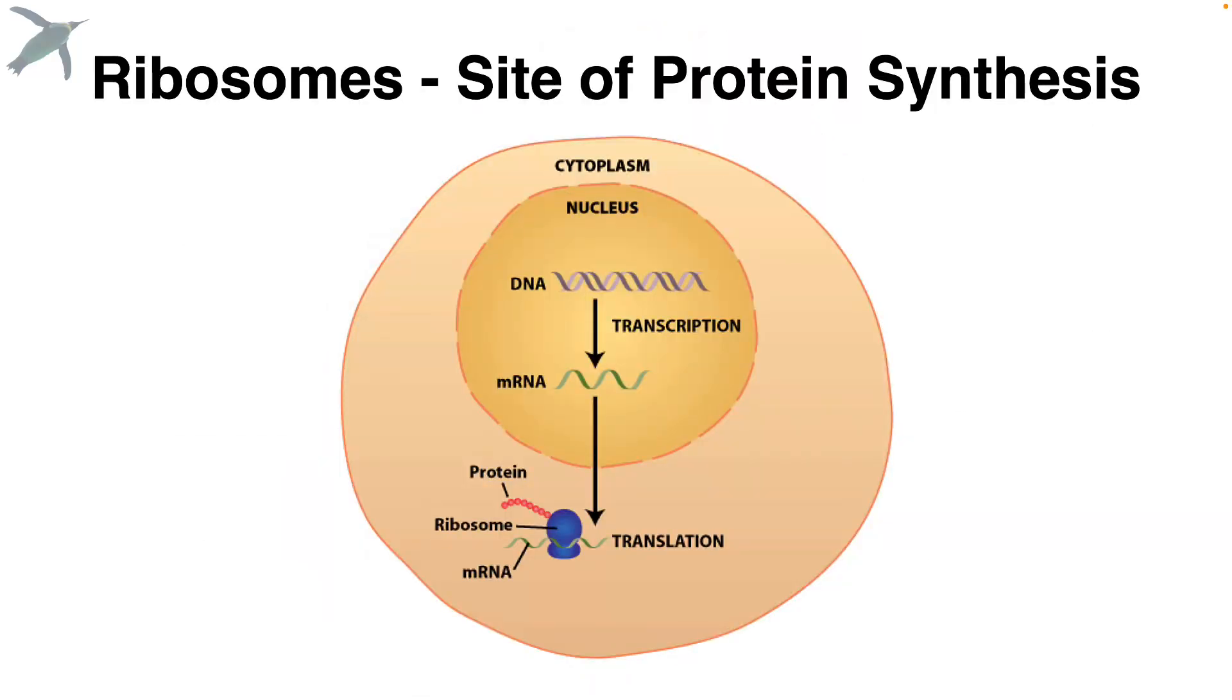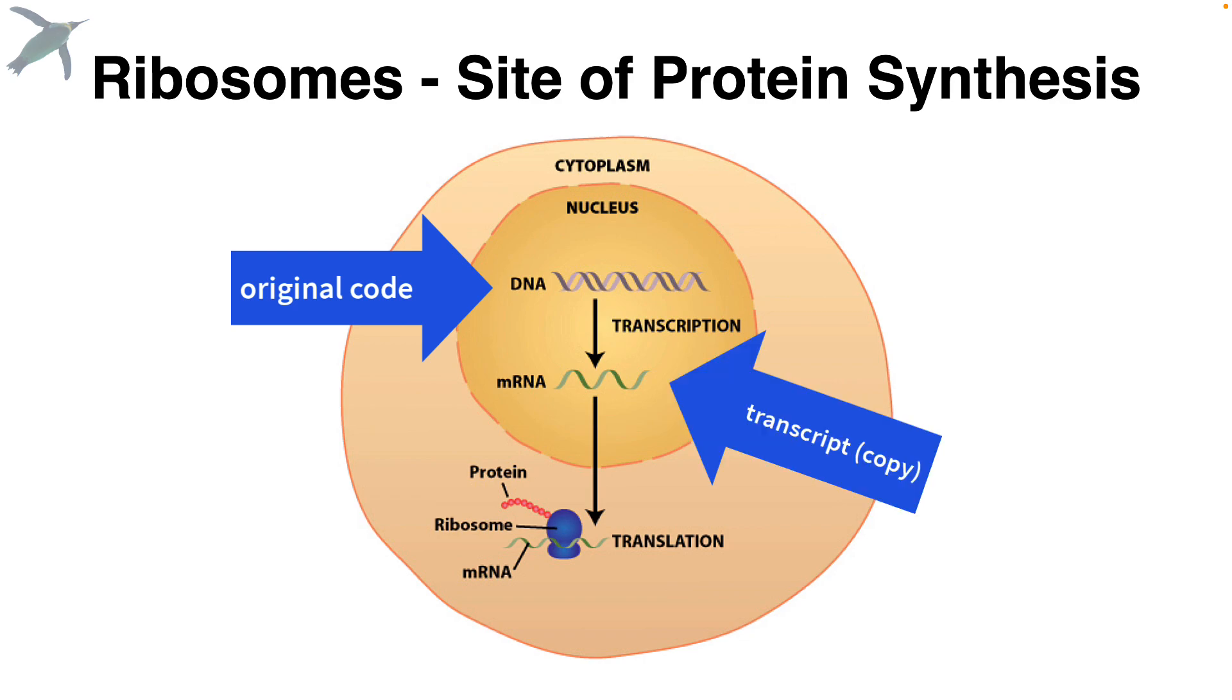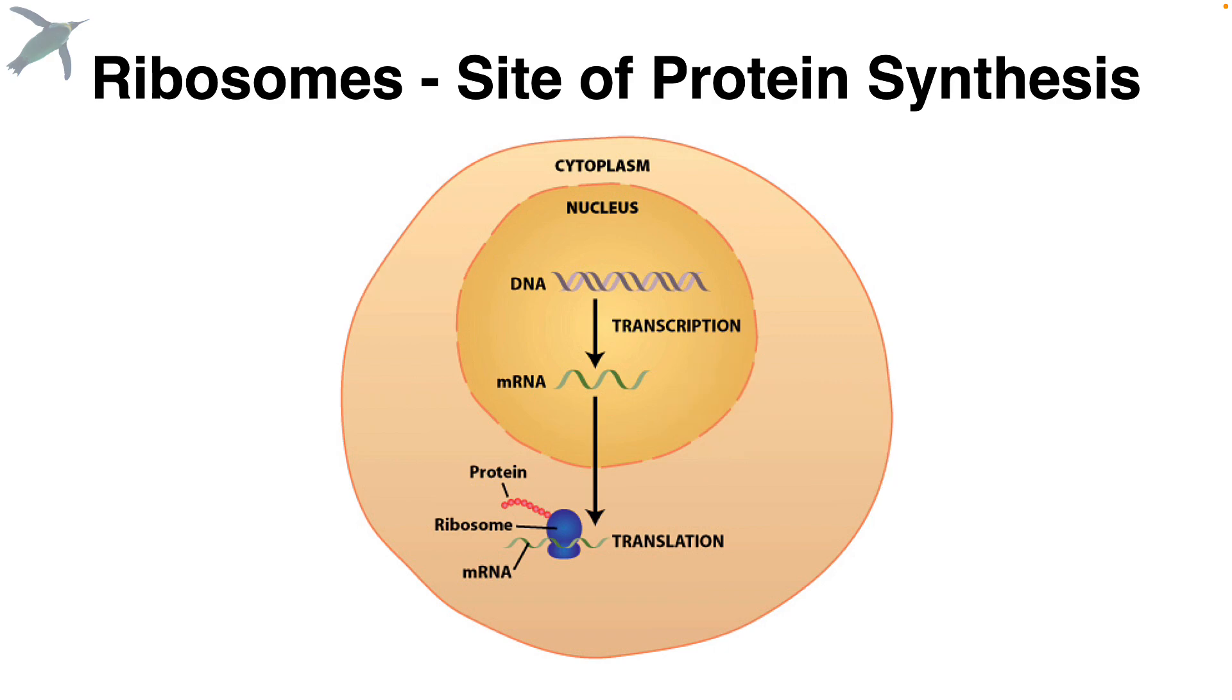And you might also remember that ribosomes can exist either floating freely in the cell or attached to other structures, these membranes. So really quick, kind of the order of events, this will help you to understand the organelles and remember them. Inside the nucleus, we have the DNA. The DNA will get transcribed, so we make a copy. Looks a little different, but carries the same language. We call that messenger RNA. The messenger RNA can leave the nucleus, and it goes out into the cytoplasm and finds itself a ribosome. And the ribosome is where that code, the messenger RNA, is going to be translated into a protein. So these ribosomes are where that translation occurs.